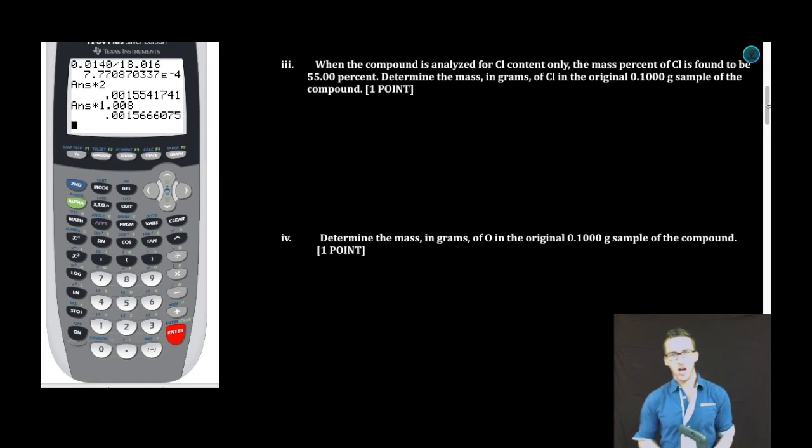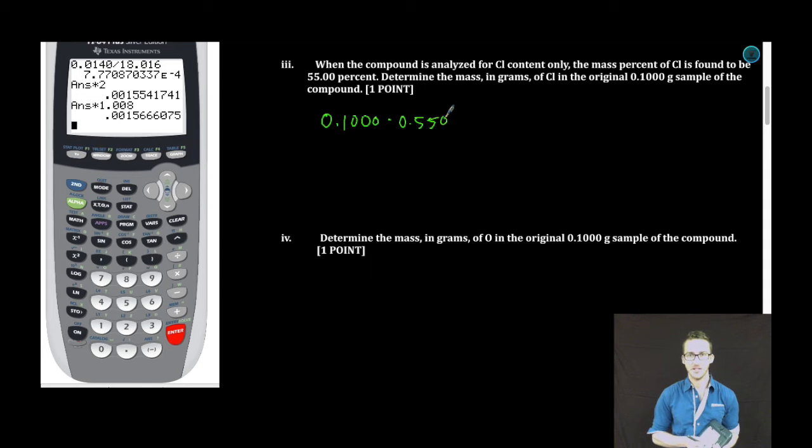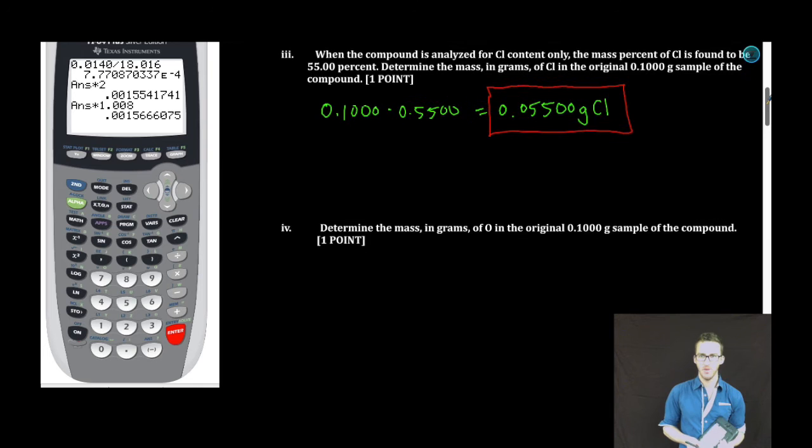Subpart III. When the compound is analyzed for chlorine content only, the mass percent of chlorine is found to be 55%. Determine the mass in grams of chlorine in the original 0.1000 gram sample of the compound. Well, this is easy enough. If we have a 0.1000 gram sample and we multiply it by 55%, or 0.5500, our chlorine content is going to be 0.05500 grams of chlorine. Boom. Easy one. Give me some more.